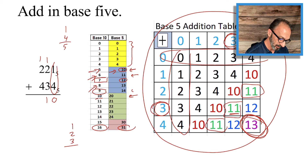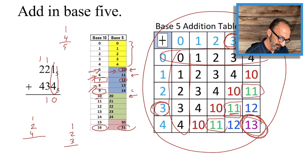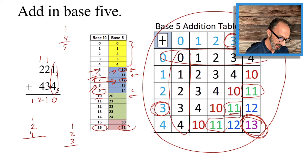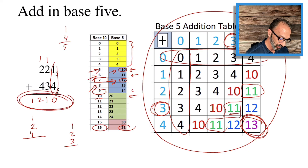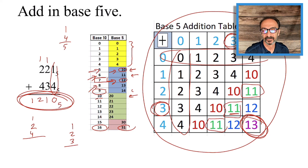The third column: 2 plus 4, but we have a carried 1 on top, so that gives us 7. What is 7? 7 is 1 five and 2 units — so we write 2 and carry the 1. We're done, so the answer is 1 2 1 0 base 5. And that's how you do it!